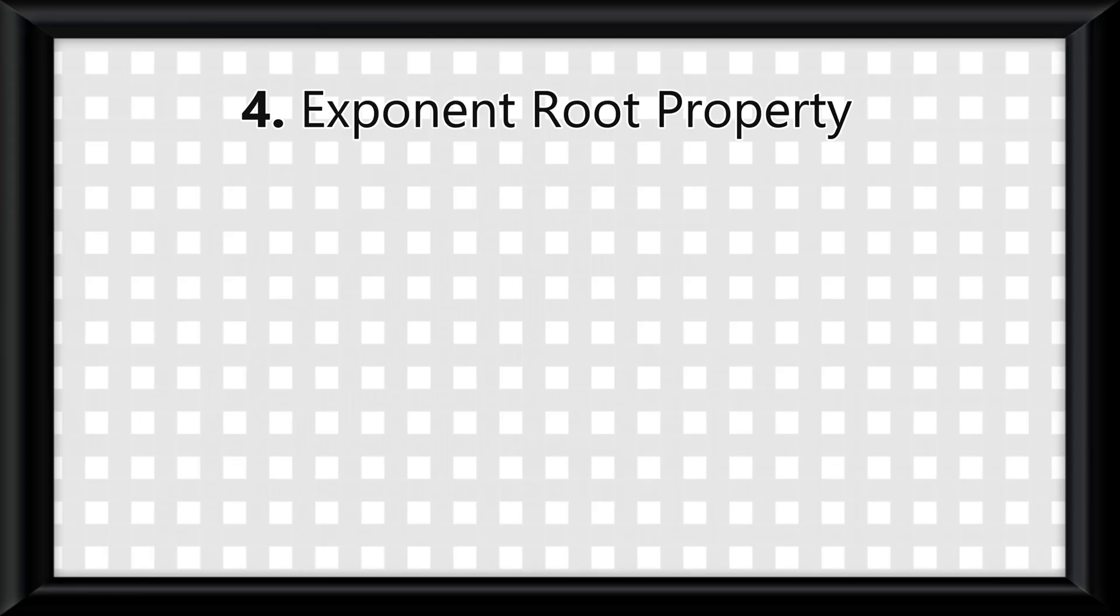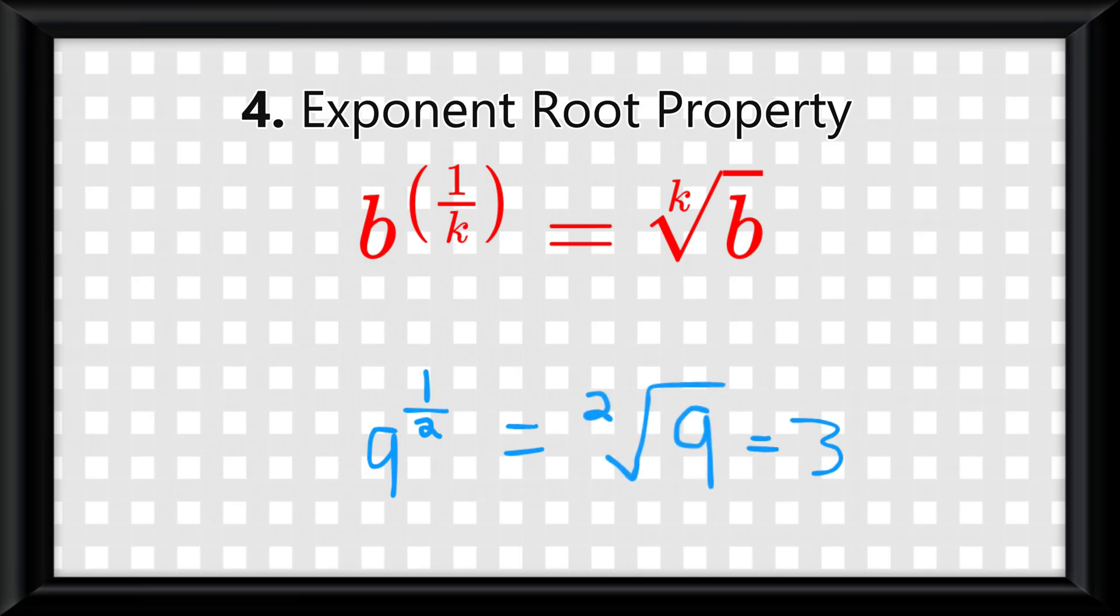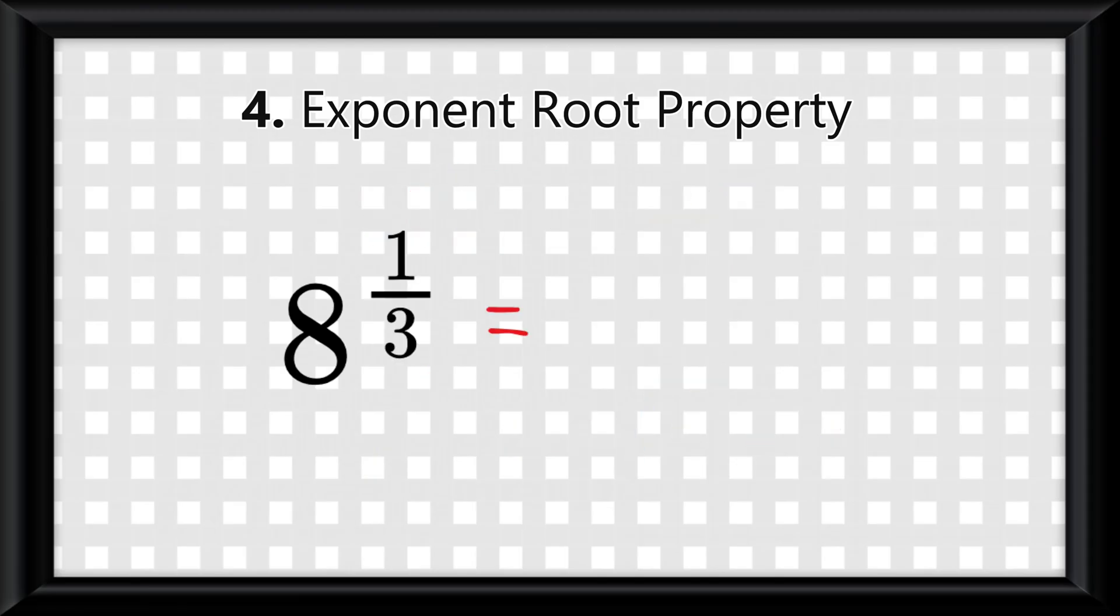Finally, we have the last property, which doesn't really have a name, so for our cases we're just going to call it the exponent root property. It states that b to the 1 over k is equal to the kth root of b. This means that if you ever have a power that is 1 over something, it's really asking you to do what the denominator's root of the function is. So for example, this equation is really asking what the third root of 8 is, which is 2.